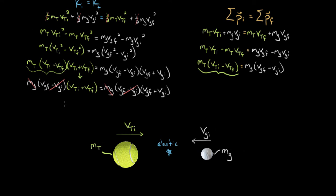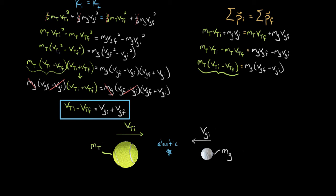We're left with one of the simplest expressions you could imagine: vti + vtf = vgi + vgf. In an elastic collision, the sum of the initial and final velocity of one object equals the sum of the initial and final velocity of the other object — regardless of the masses. I would never have seen this without solving symbolically. I could have solved a million of these elastic problems numerically and probably never guessed this was the case.